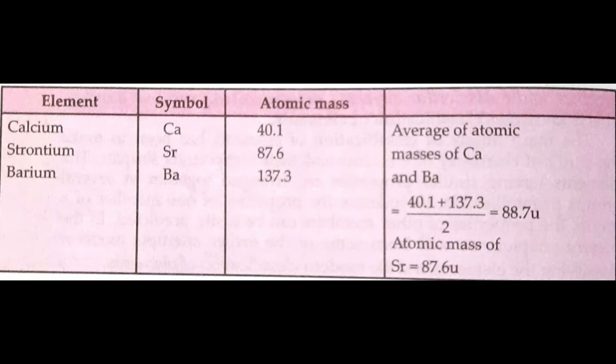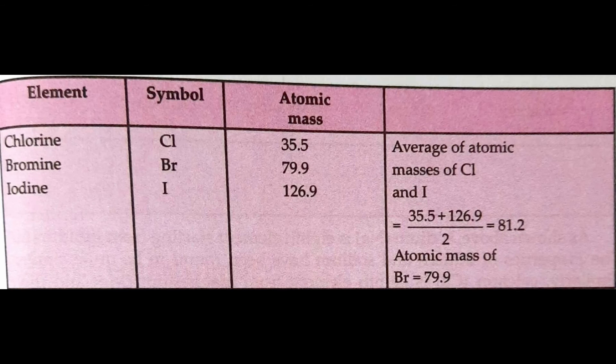Similarly, calcium, strontium, and barium have similar properties and also form a Döbereiner triad. The atomic mass of the middle element strontium is 87.6 u, which is nearly the same as the average of 88.7 u of the atomic masses of calcium and barium. These elements are called alkaline earth metals because their oxides are alkaline in nature.